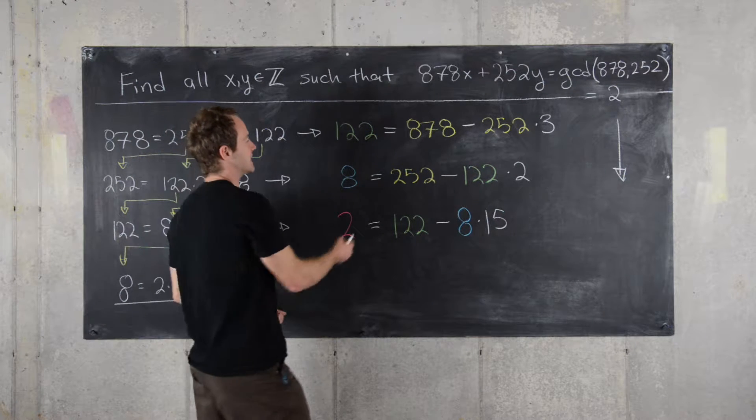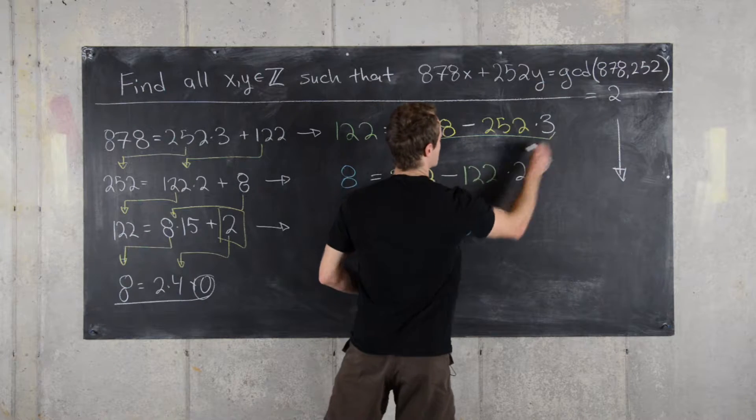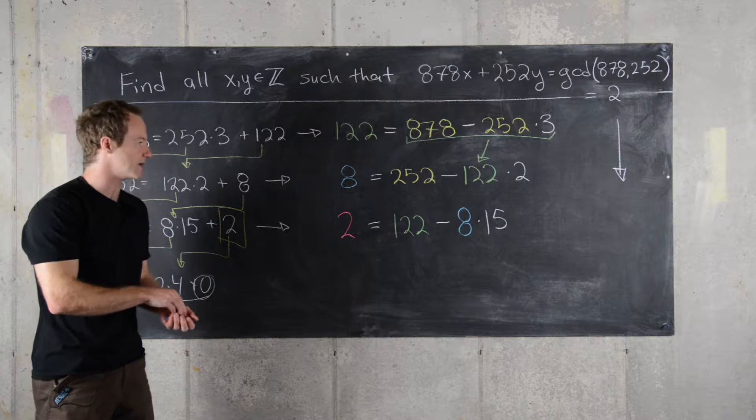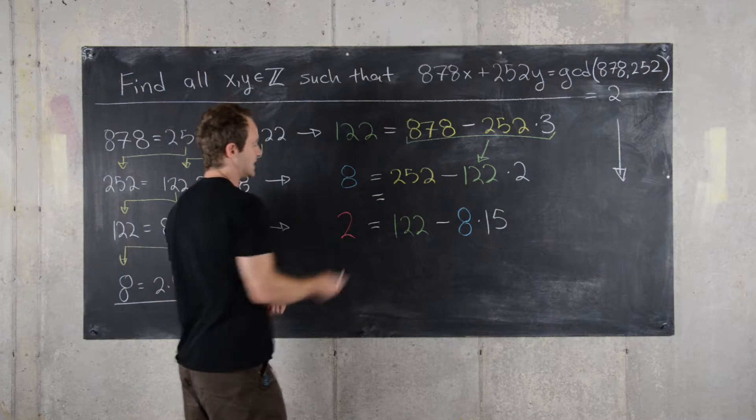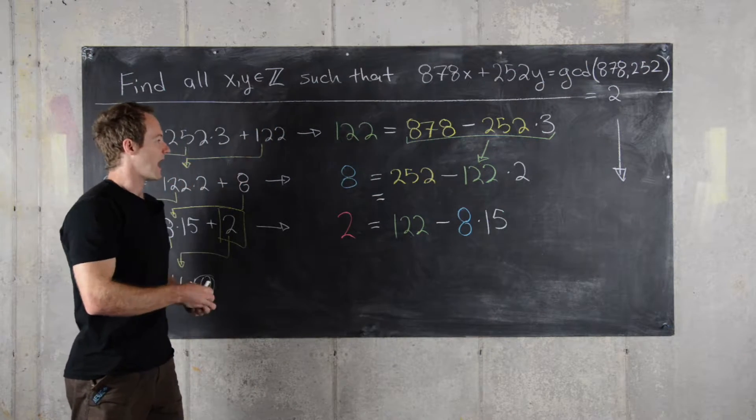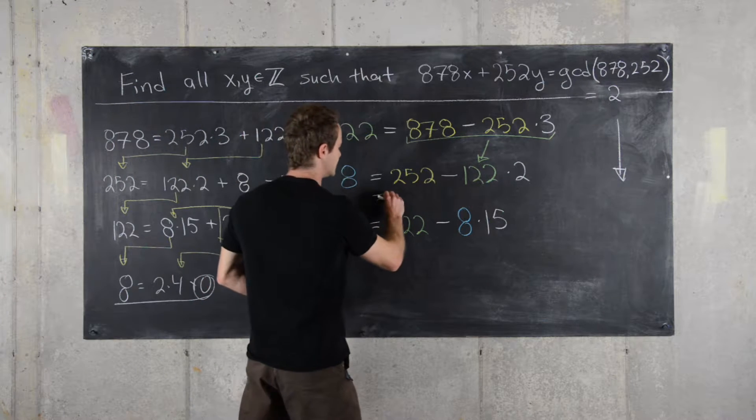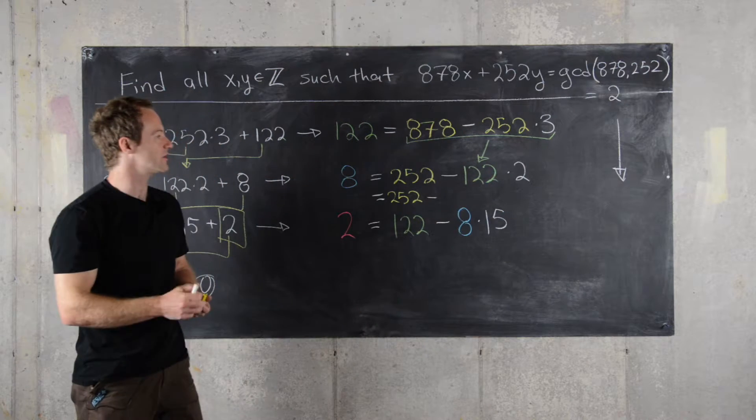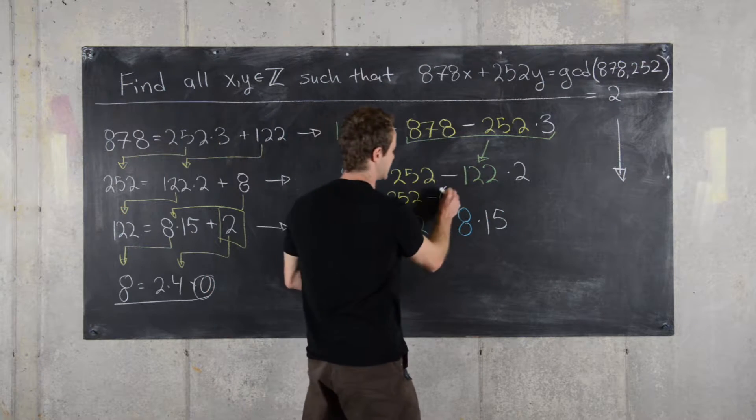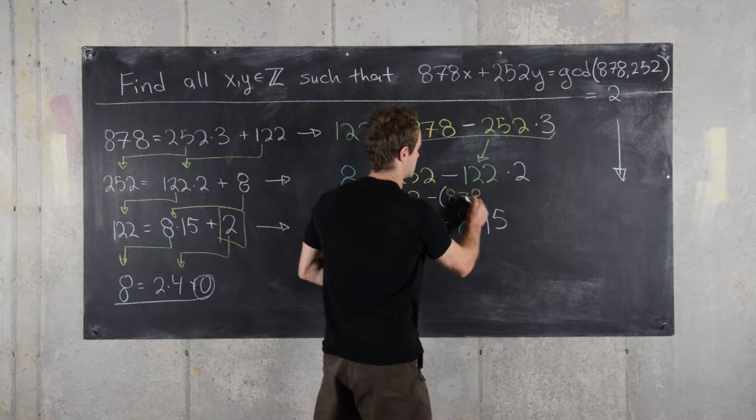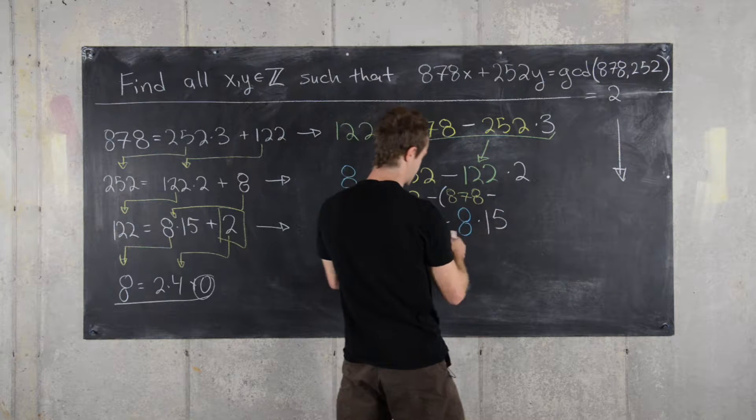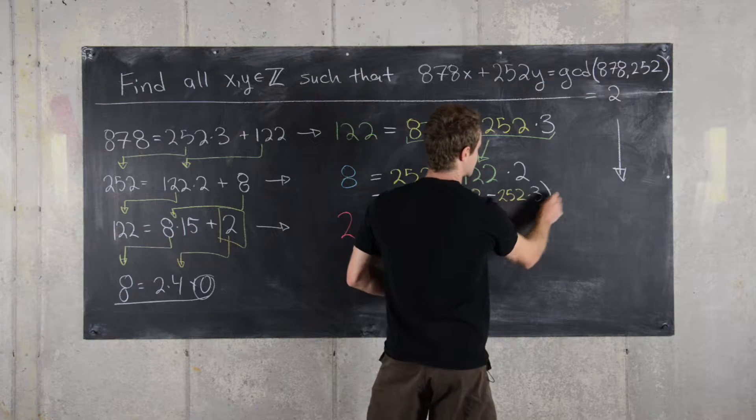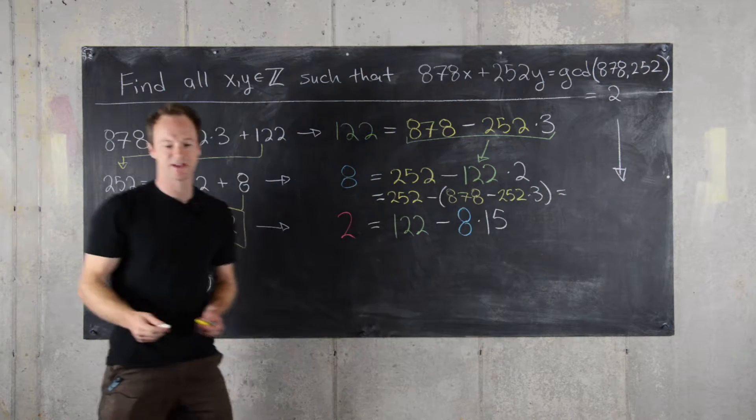So let's get going. The first thing we'll do is take this value, that's an expression for 122, and we'll substitute it down into what we have here for 8. So this allows us to write 8 as 252 minus, and so now instead of 122, we're going to write 878 minus 252 times 3.